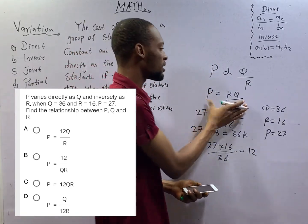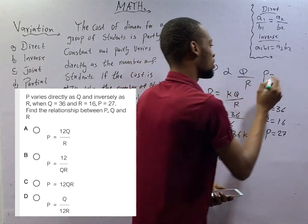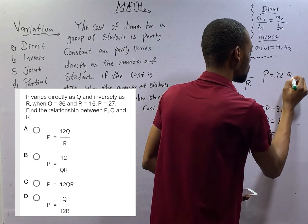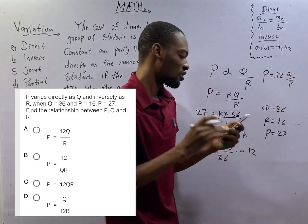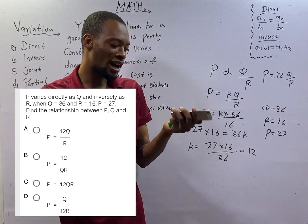You come back to this place. P equals K, 12, times Q over R. So the relationship between P, Q and R is 12Q over R. Option A is the correct option.